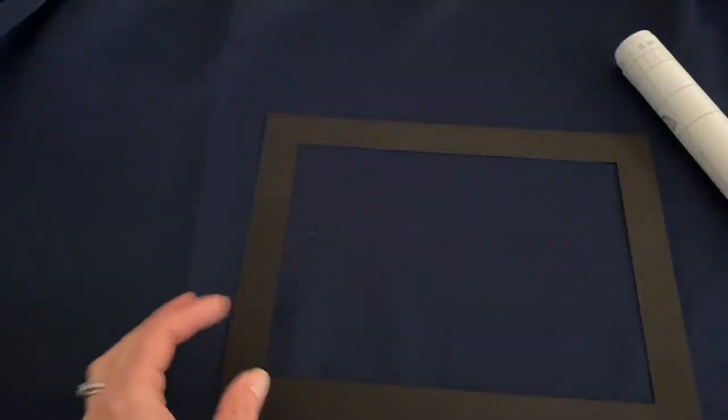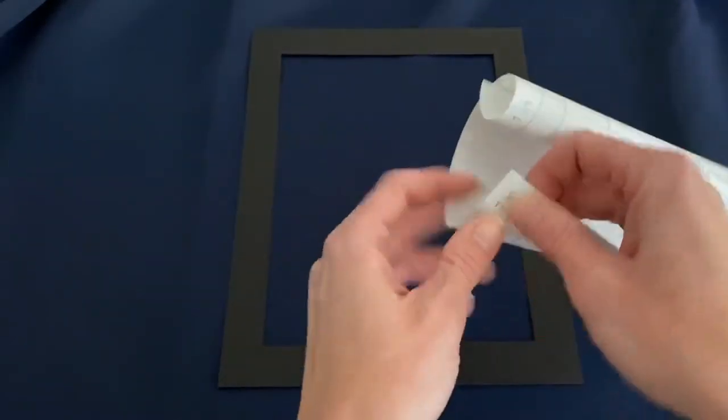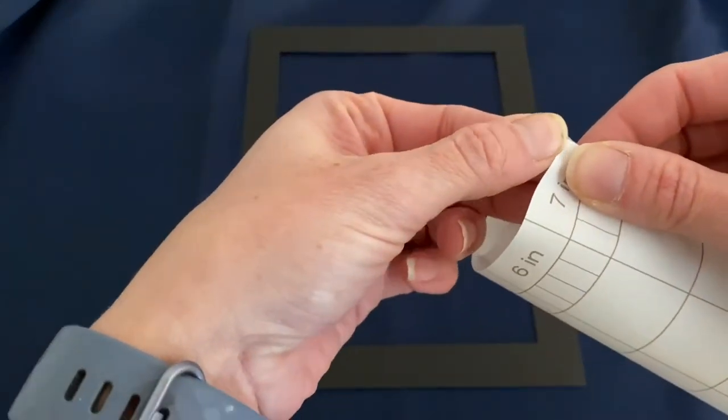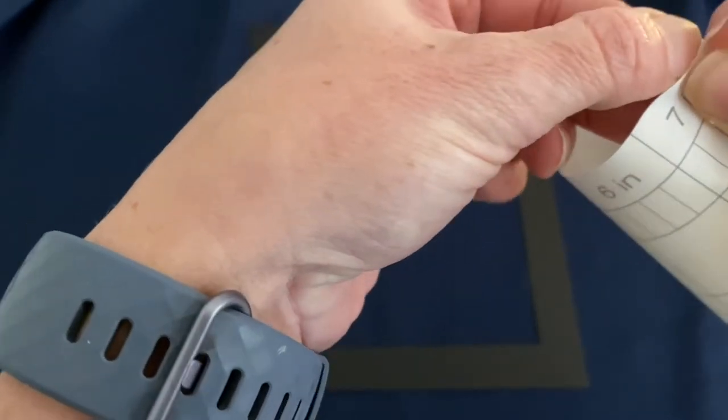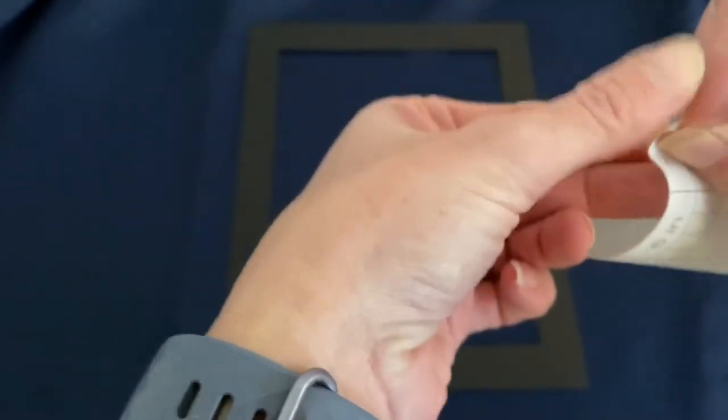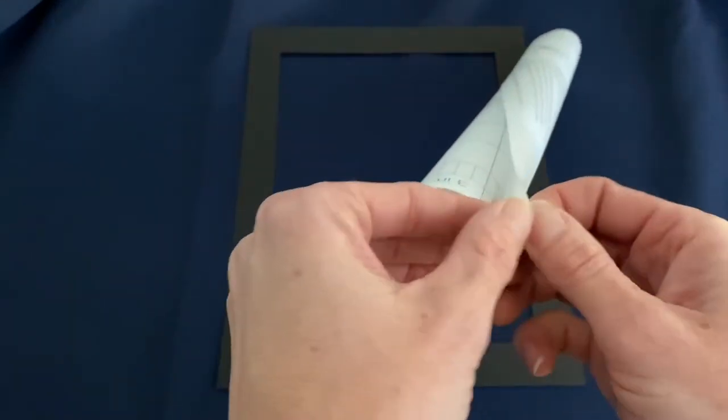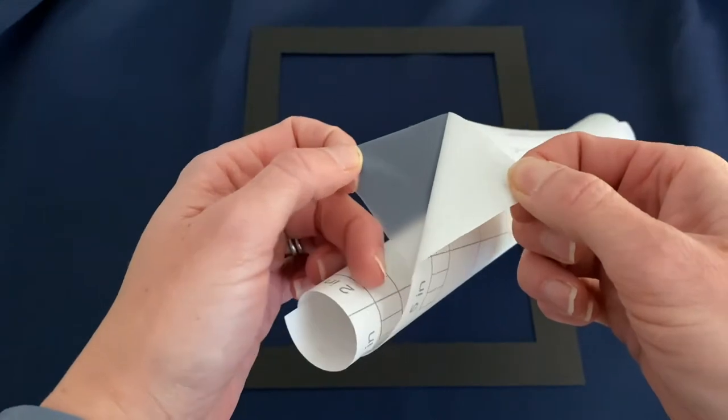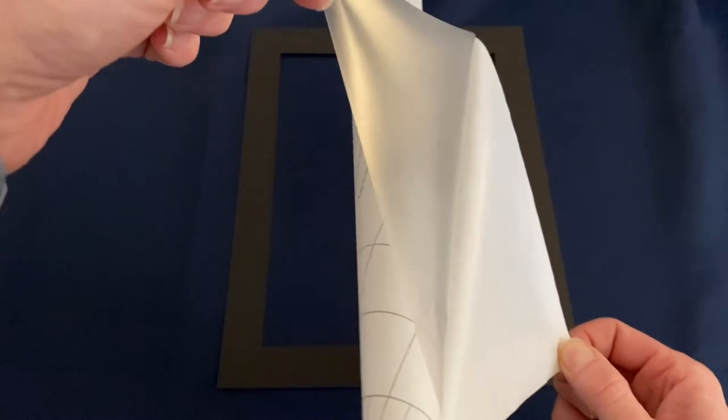I'm going to put these other things aside for now. This contact paper is a little tricky because it tends to roll up, but you want to separate just the corner edge here. You can see it's sticky on one side, and this backing just peels off. When you're peeling it, go nice and slow and hold up this corner.